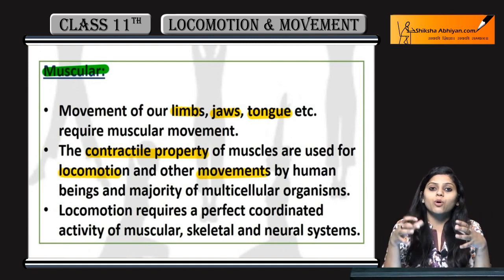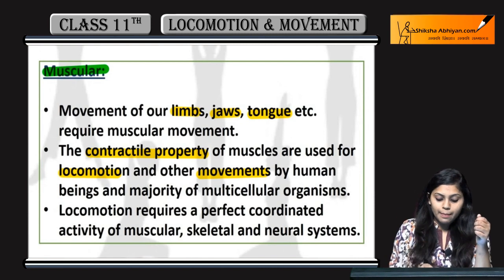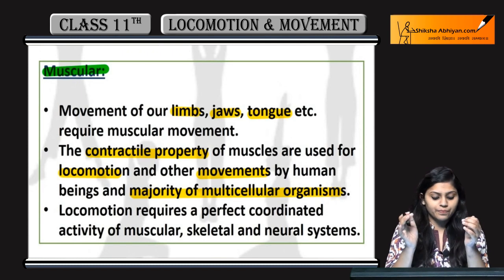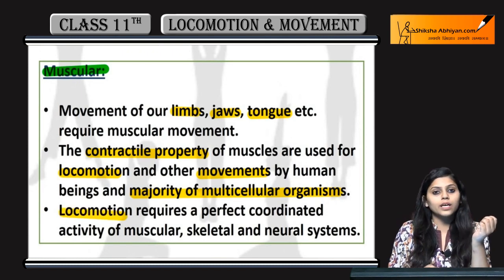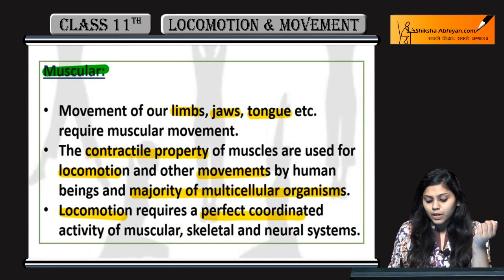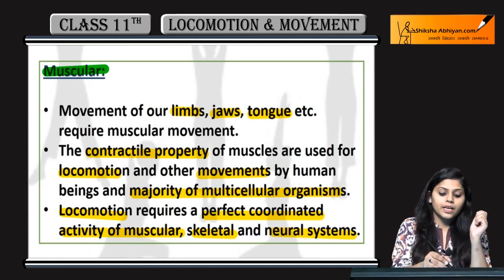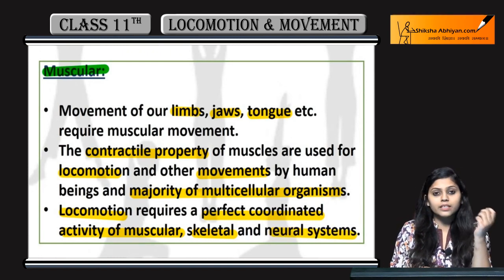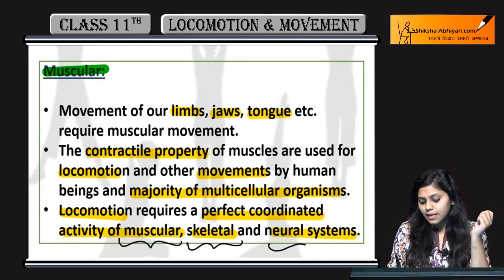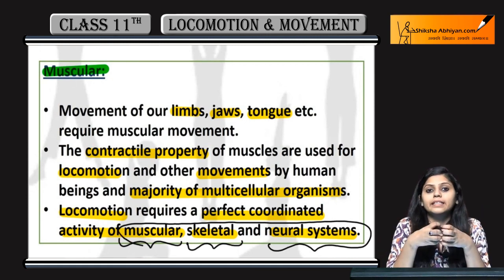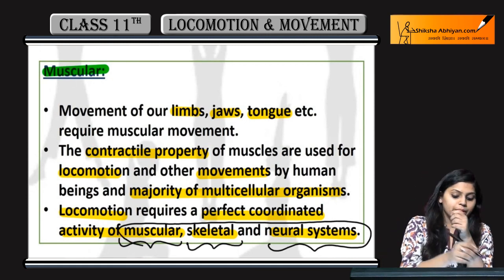Muscles ki contractile property ki wajah se locomotion and movements are possible. Majority of multicellular organisms mein muscular movement possible hai. Locomotion require karta hai a perfect coordinated activity of muscular, skeletal, and neural systems — teeno ka coordination zaroori hai.